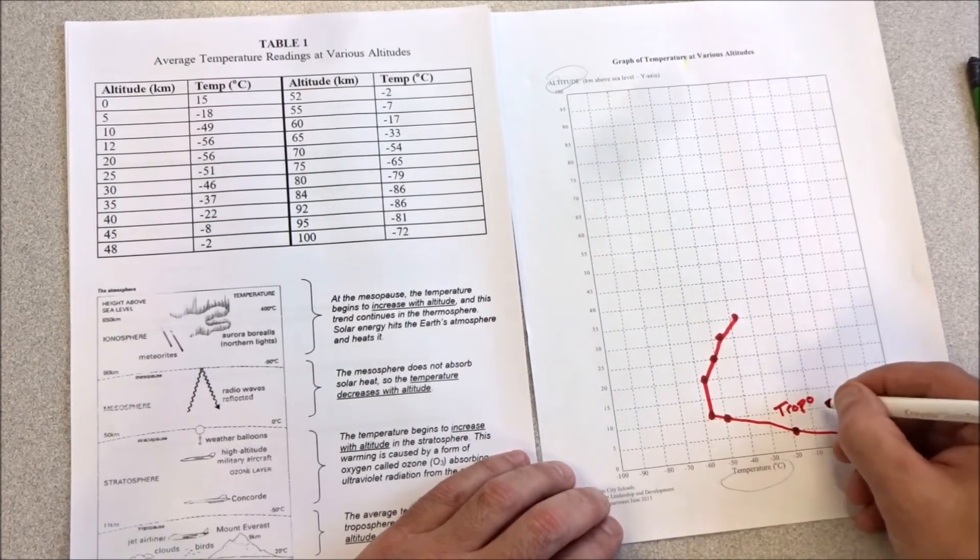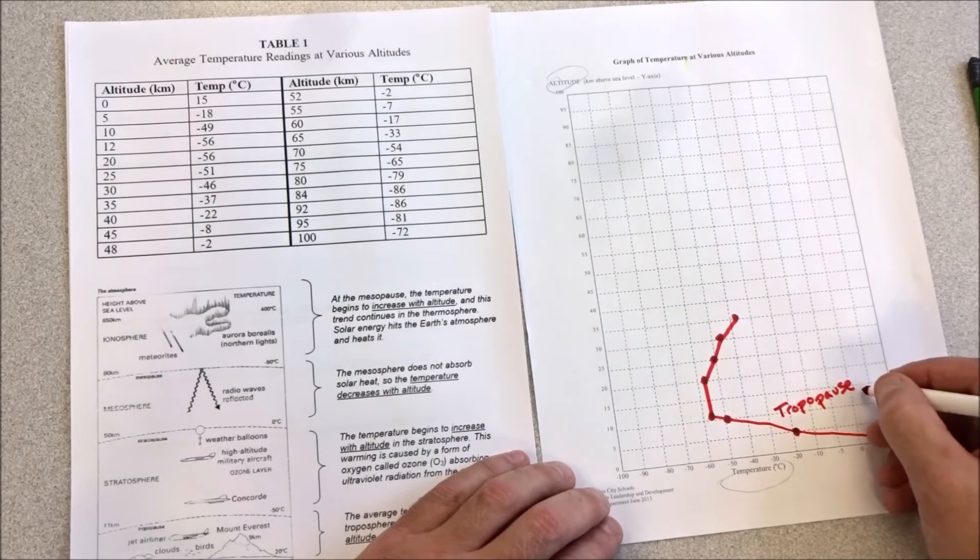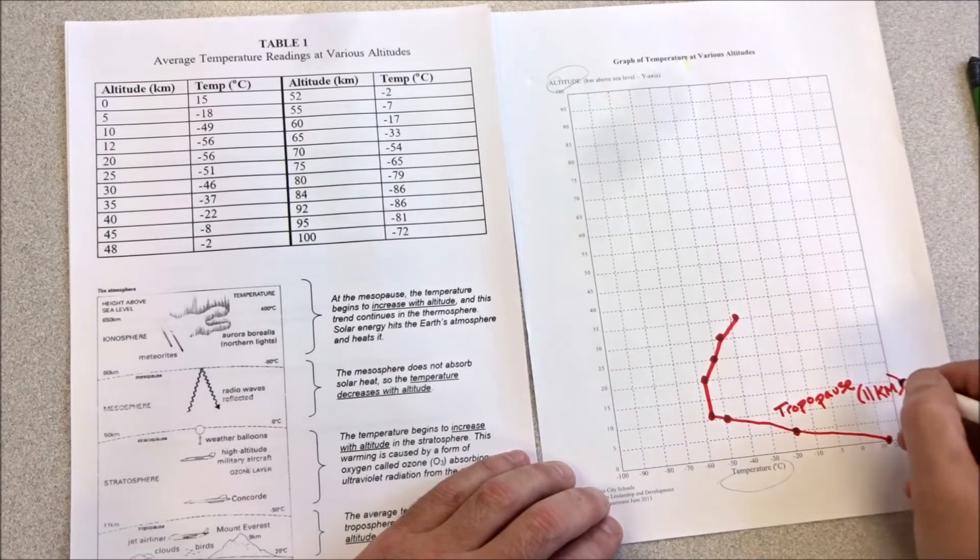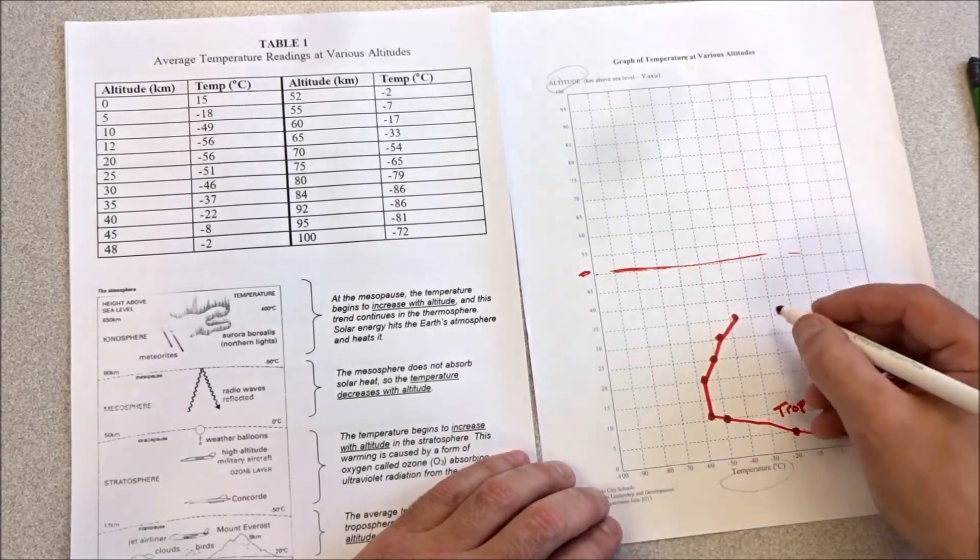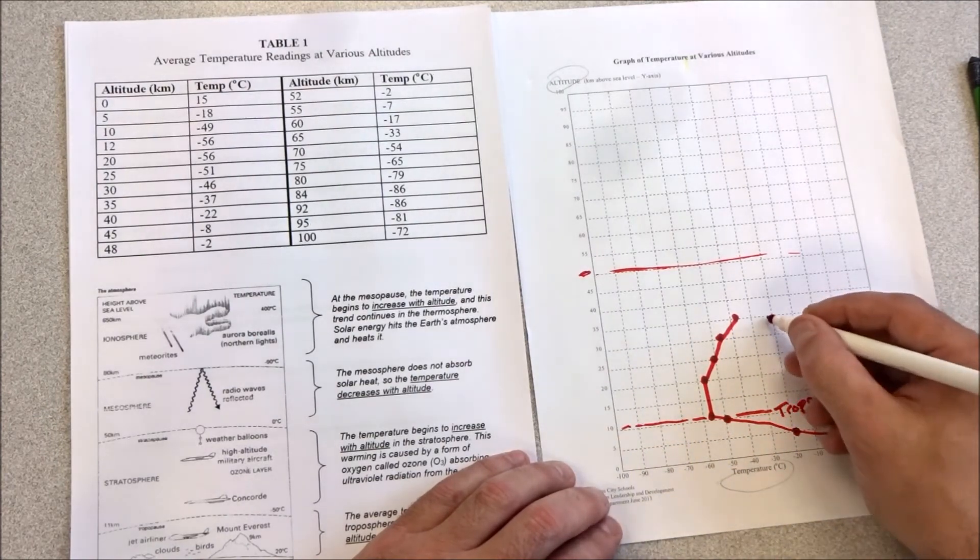And you could put in man-made objects that are typically found at those levels, like aircraft or hot air balloons, satellites, etc.